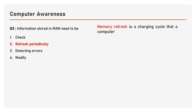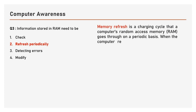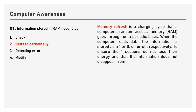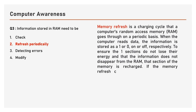Memory refresh is a charging cycle that a computer's random access memory, RAM, goes through on a periodic basis. When the computer reads data, the information is stored as a 1 or 0 — on or off, respectively. To ensure the 1 sections do not lose their energy and that the information does not disappear from the RAM, that section of memory is recharged. If the memory refresh cycle did not occur, then any information read by the computer would disappear in a few milliseconds.